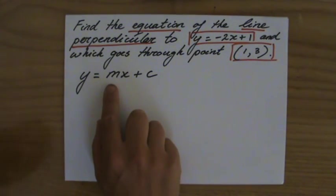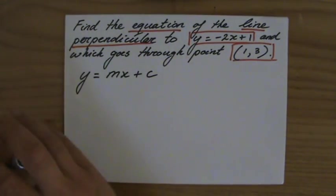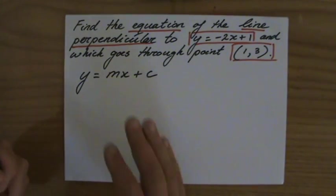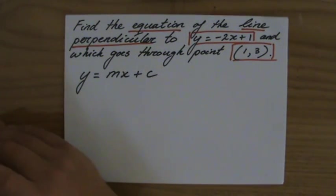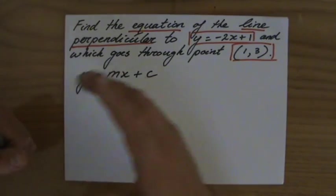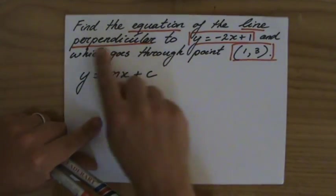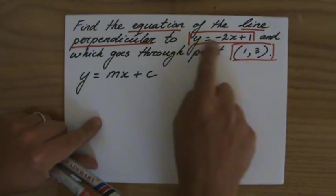We always find the gradient first, delta y over delta x, the difference in the y direction divided by the difference in the x direction. However, they don't give me two points to calculate the gradient or a graph, but they tell me it has to be perpendicular to that particular line.